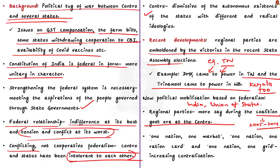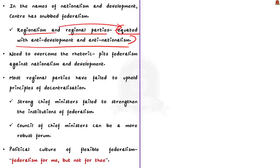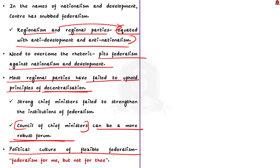Some of the policies of the center such as One Nation One Ration Card and One Nation One Grid are considered as part of increasing centralization. This editorial says that in the name of nationalism and development, the center has clearly avoided the concept of federalism. Even regionalism and regional parties are equated with anti-development and anti-nationalism. The need of the hour is to overcome the nationalist rhetoric that pits federalism against nationalism and development. But this would be difficult as most regional parties have failed to uphold principles of decentralization in their own states. It is striking that strong chief ministers of states did very little to strengthen the institutions of federalism, for example by making the council of chief ministers a more robust forum. As Pratap Bhanu Mehta, an Indian academician, says, we have a political culture of flexible federalism — that is, federalism for me but not for thee.